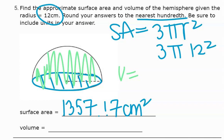So it's half of the regular volume formula, which just becomes ⅔πr³. Alright, so ⅔π times 12 cubed.